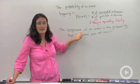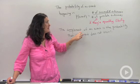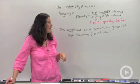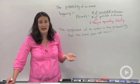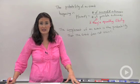Last thing I want to leave you with is a new definition about a complement. The complement of an event is the probability that the event does not occur. Like let's say the weather forecast is 80% chance of rain.